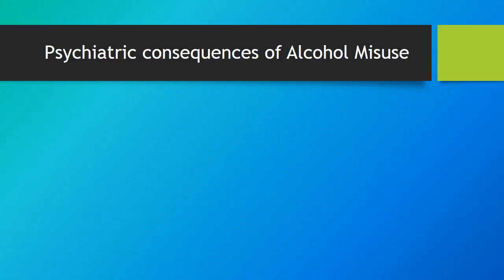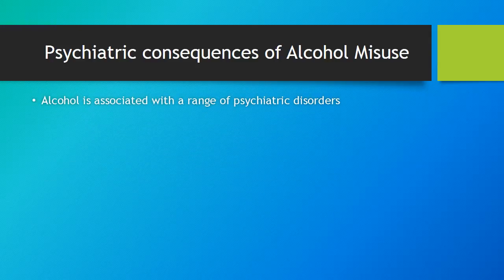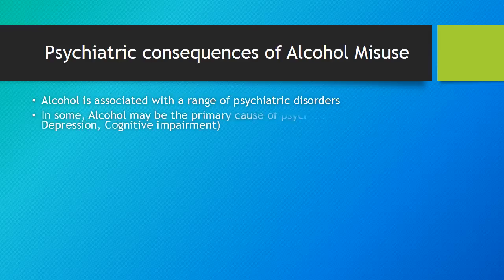In this slide, I have summarized the main psychiatric consequences of alcohol misuse. Alcohol is associated with a range of psychiatric disorders. In some patients, alcohol may be the primary cause of psychiatric symptoms, such as depression or cognitive impairment. So unless you address the alcohol issue, the symptoms will persist. This might explain some cases of patients with depression who are not responding to antidepressants — unless you take an alcohol history and address that issue, the depression will remain unresolved.